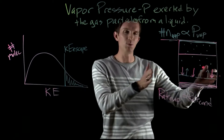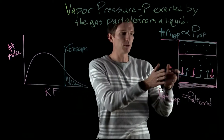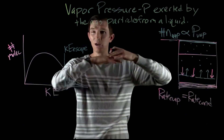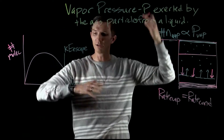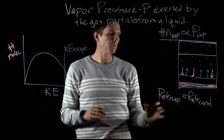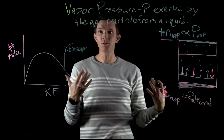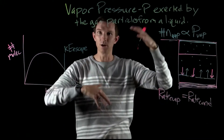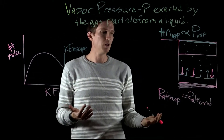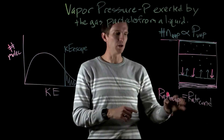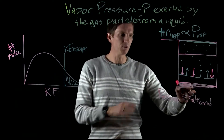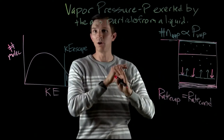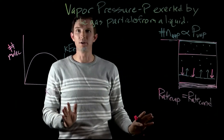If we spread the liquid out, we'd have a higher evaporation rate because of more surface area for particles to leave — but the condensation rate also increases because there's more surface area for particles to come back down and collide with. So the amount of liquid, the surface area of the liquid, and the volume of gas above the liquid do not affect our vapor pressure.